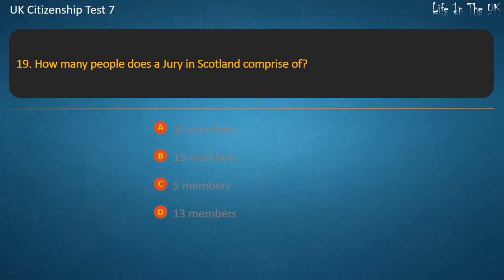Question 19: How many people does a jury in Scotland comprise of? Options: 10 members, 15 members, 5 members, 13 members. Answer: 15 members.